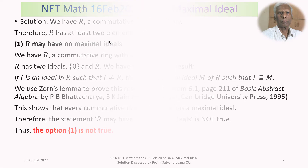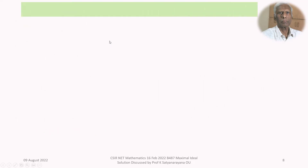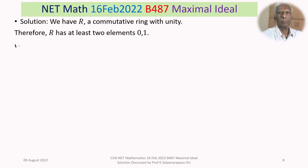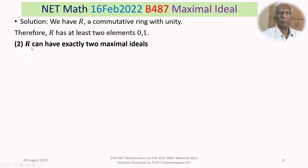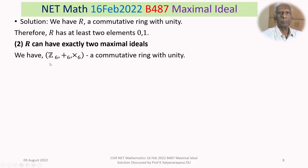Let's move to option 2: R can have exactly two maximal ideals. 'Can have' means if we can exhibit a ring R which admits exactly two maximal ideals, then this statement is true. We consider the example Z6 under addition modulo 6 and multiplication modulo 6; it is a commutative ring with unity.